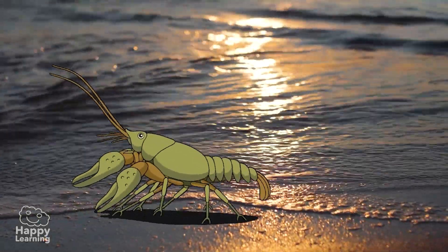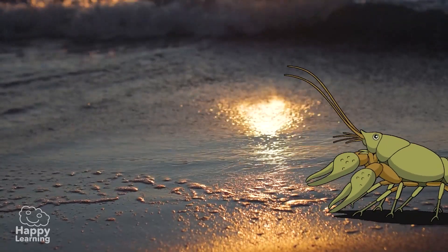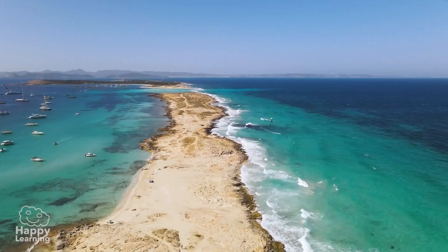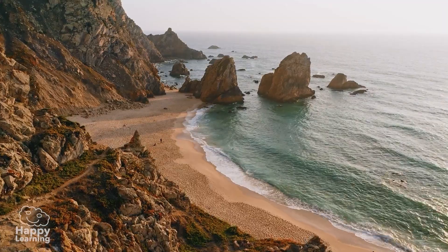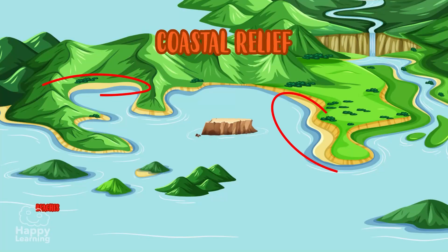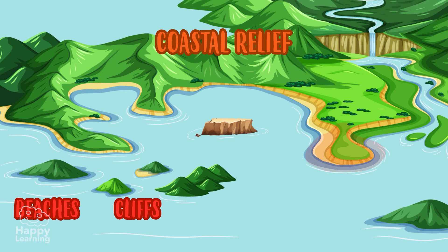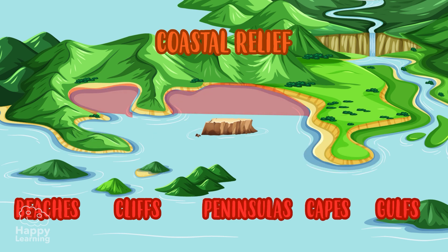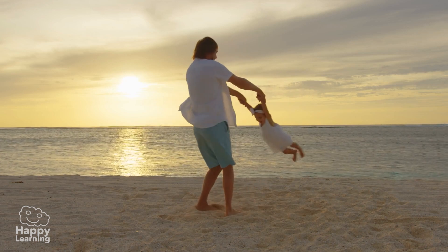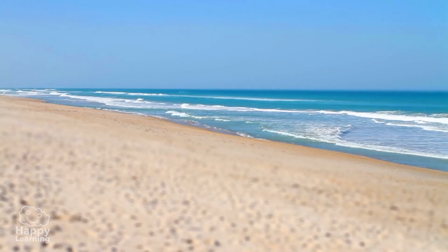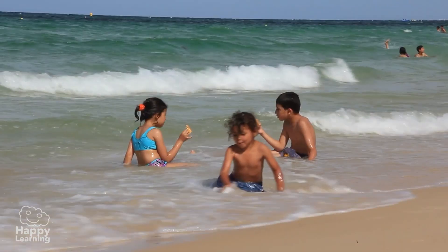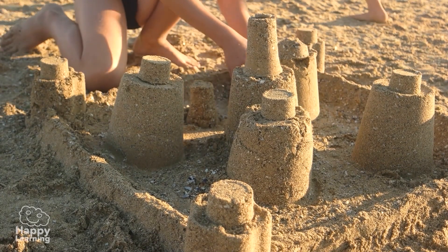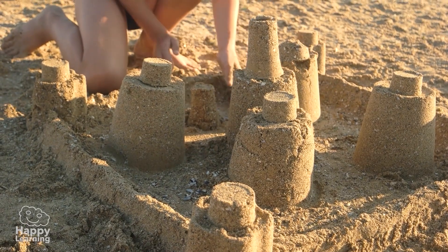The coastal relief is found in the areas closest to the sea. Here we find beaches, cliffs, peninsulas, capes, and gulfs. And look — this sand castle is pretty cool, isn't it?